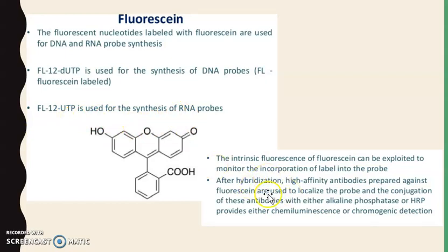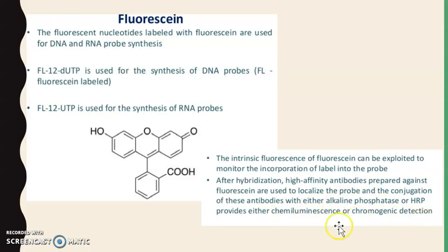After hybridization, high-affinity antibodies prepared against fluorescein are used to localize the probe. The conjugation of these antibodies with either alkaline phosphatase or HRP provides chemiluminescence or chromogenic detection. So fluorescein is a small hapten molecule that can be used to label DNA probes.